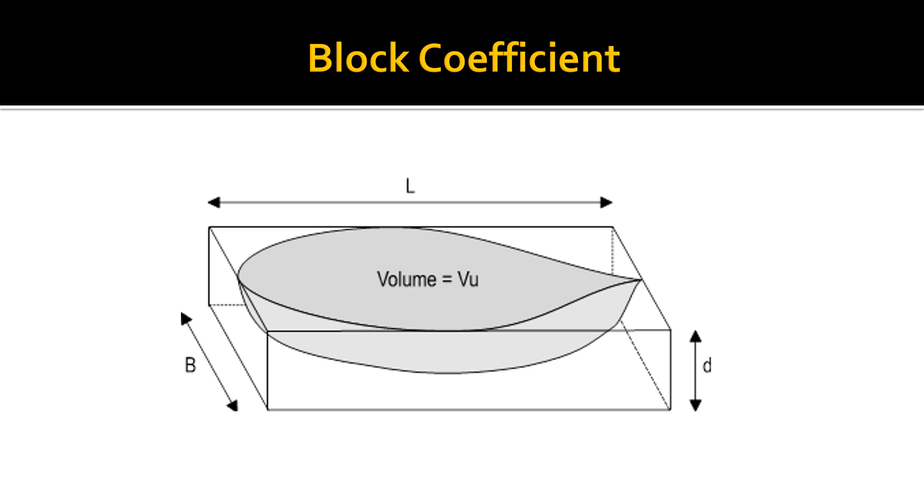So the overall dimension. When we transpose for CB in the formula, where VU equals CB times L times B times the draft, CB would be equal to VU divided by L times B times draft.